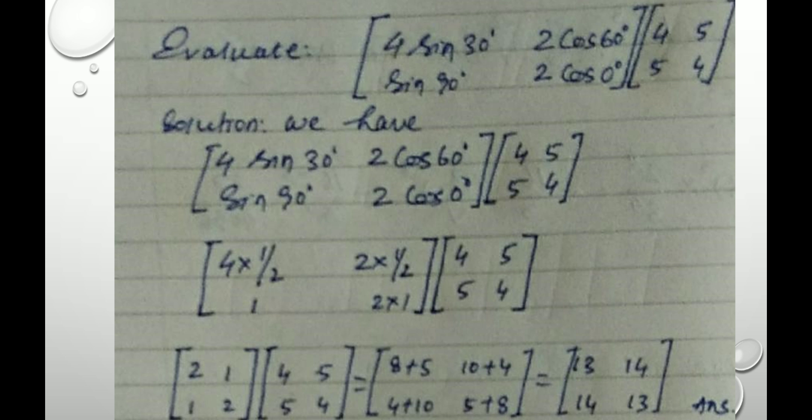We know that sin 30 degree is equal to 1 by 2, cos 60 degree is 1 by 2, sin 90 is 1, cos 0 is 1. Replacing those trigonometrical values, we get 4 into 1 by 2, 2 into 1 by 2, then 1 and 2 into 1, to be multiplied with 4, 5, 5, 4.